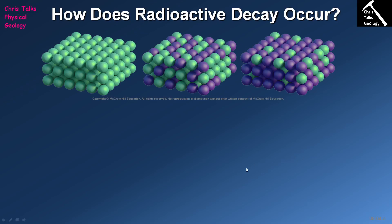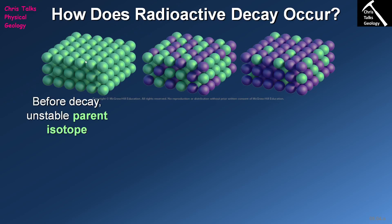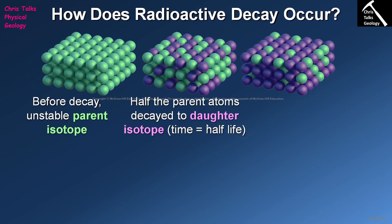So if you have a mineral that contains these radioactive isotopes, what's going to happen? In this diagram you can see we have row upon row of radioactive isotopes — these are the green spheres. The radioactive isotope that's doing the decaying is referred to as the parent isotope, and through radioactive decay the parent isotope is going to change into the daughter isotope. The daughter isotope is stable — in the case of uranium, it decays and eventually forms lead, which is stable, so at that point the decay stops.